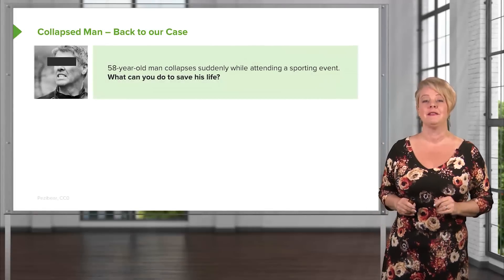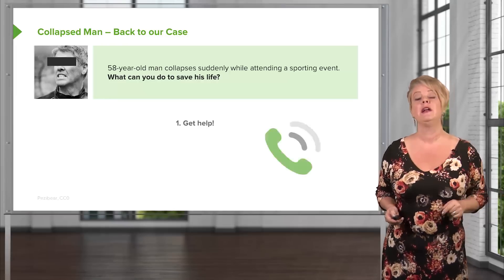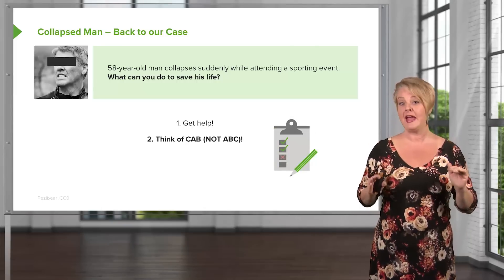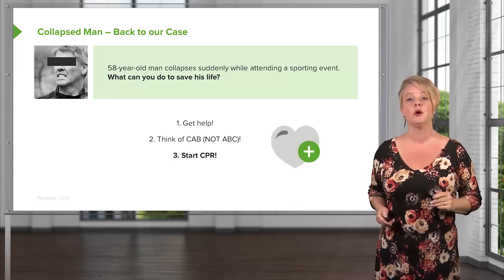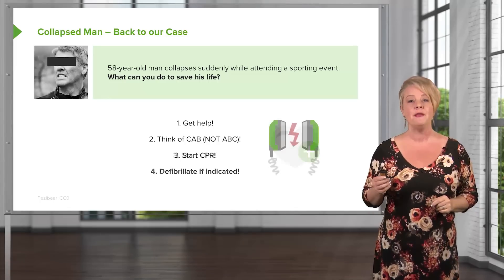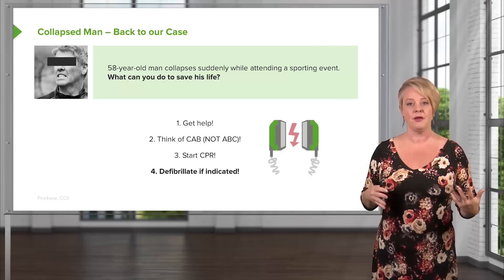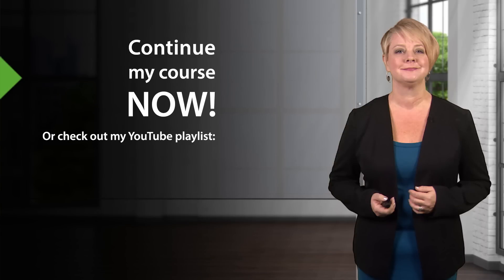Back to our case: a 58-year-old man who collapsed at a sporting event. First, call for help quickly. Second, think CAB — check for a carotid pulse, and if absent, initiate chest compressions. Then, as soon as a defibrillator is available — which at a sporting event should be quickly — put it on, assess the rhythm, and defibrillate if indicated.